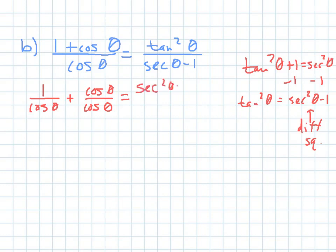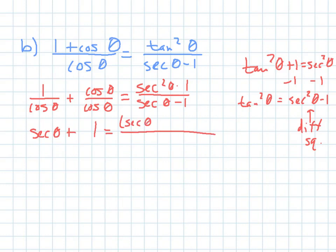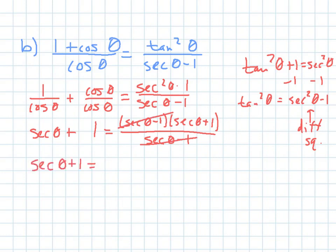So I insert secant squared theta minus one over secant theta minus one. On the left side, one over cosine theta is secant theta, and cosine over cosine is one, so the left side becomes secant theta plus one. On the right side, factoring gives secant theta minus one times secant theta plus one over secant theta minus one. The secant theta minus one cancels, leaving secant theta plus one on both sides. So sometimes working with both sides simultaneously is helpful in reaching what you desire.